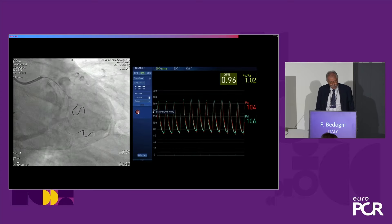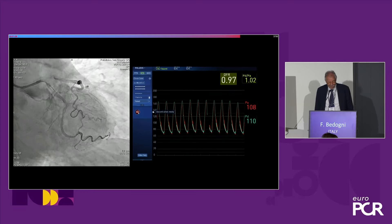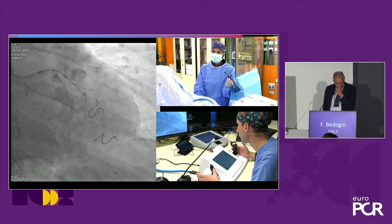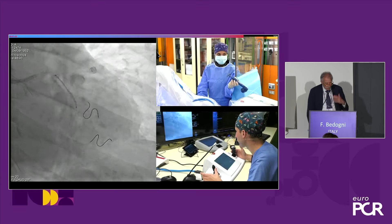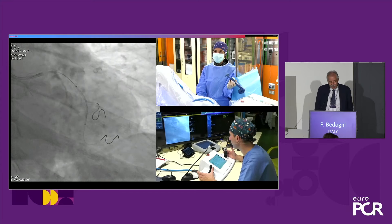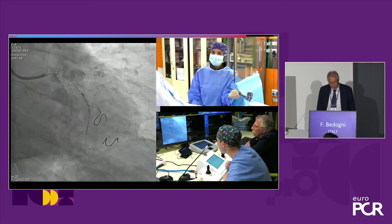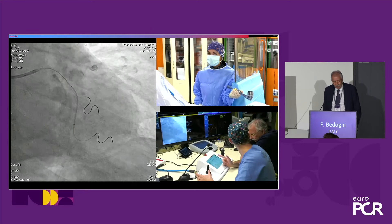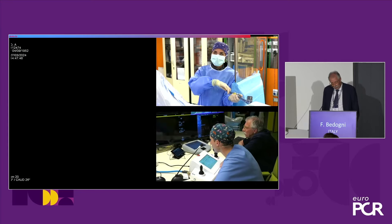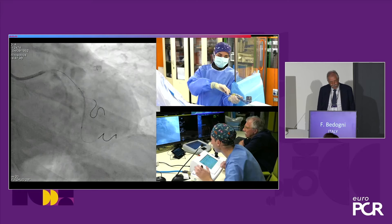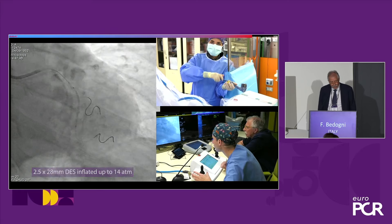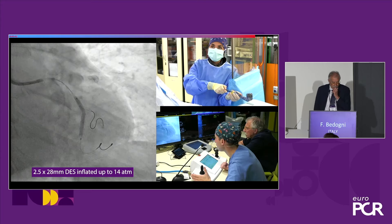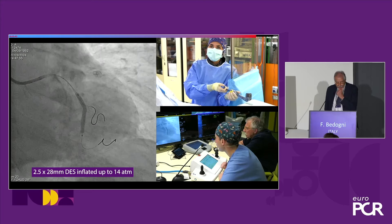But if you check the end of the vessel, there is a dissection that we discussed. We can leave it or put a stent at the end to fix the lesion. It's an acute patient treated the day before. So we put a stent in the same working path. We implanted the stent with very precise positioning — a 2.5×28 drug-eluting stent.